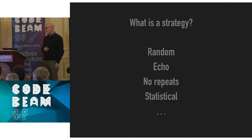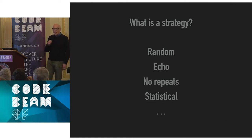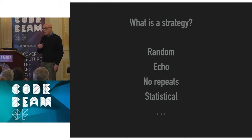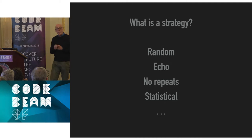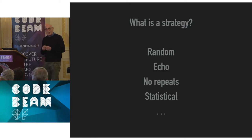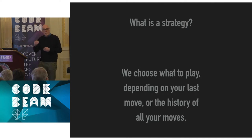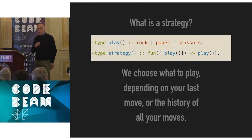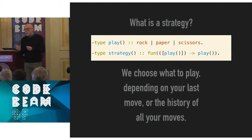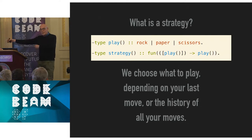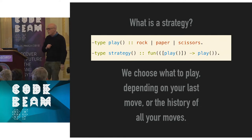One of the strategies I like best exploits the fact that people's perception of randomness isn't quite what we'd expect — people will often not repeat their previous play. So you can get an edge by assuming your opponent won't repeat their previous move. In each case, the computer is choosing what to play based on the history. So we have a type for plays, and a strategy is a function from a list of plays to a play.